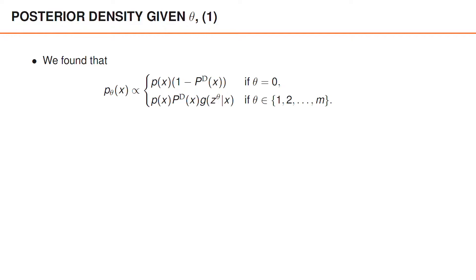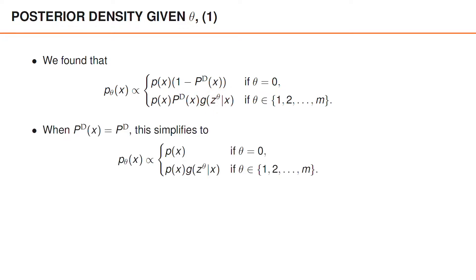In the previous video, we found that Pθ is proportional to the following expression when θ equals 0, and the following expression when θ is greater than 0. Under the assumption that the probability of detection is constant, we obtain a simpler expression, since the factors 1-pd and pd can be absorbed into the proportionality constant. When θ equals 0, Pθ is simply proportional to the prior density — that is, we skip the update step if the object is undetected. If θ is greater than 0, Pθ is proportional to the prior times g of zθ given x, meaning we update the prior using the likelihood g of zθ given x, if θ states that zθ is the object measurement. Note that we only use the assumption that PD is constant, and the expression for Pθ already looks much simpler.